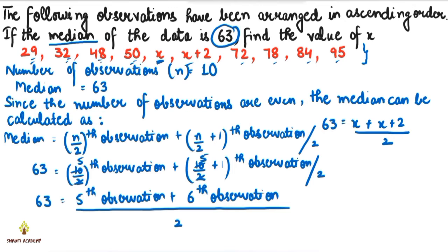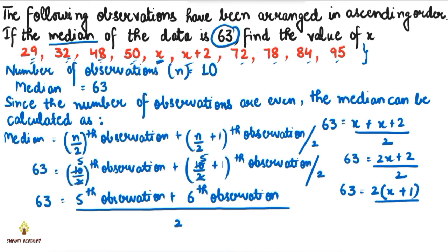The median given is 63. So we have: 63 = (x + x + 2) / 2, which is (2x + 2) / 2. We take 2 as common from the numerator, giving 2(x + 1) / 2. The 2s cancel out.